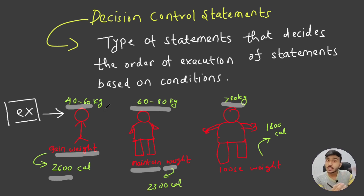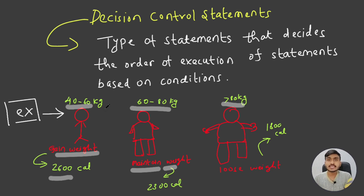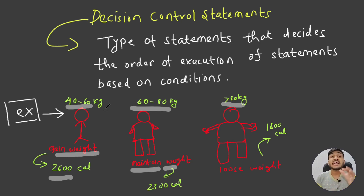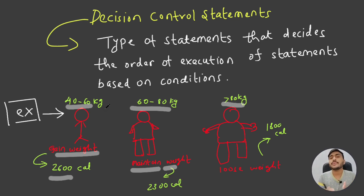Whenever we have to take some decision based on some condition — for example, you ask me how many calories you should eat — I have some decision statements. I will check: if your weight is between 40 to 60 kg, eat 2600 calories; if between 60 to 80 kg, eat 2300 calories; if greater than 80 kg, eat 1800 calories. So these are nothing but decision statements. The weight ranges are our conditions, and based on those conditions we decide which statements are going to be executed. I hope now you are clear on the basics of decision control statements.